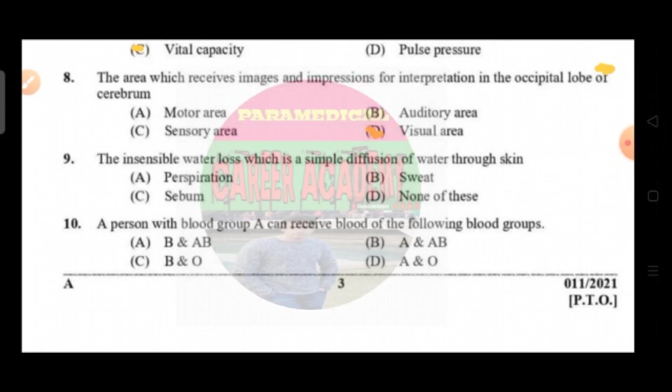Question number eight: the area which receives images and impressions for interpretation in the occipital lobe of the cerebrum. Option A is motor area, option B auditory area, option C is sensory area, and option D is visual area. The correct answer is option D, that is visual area.